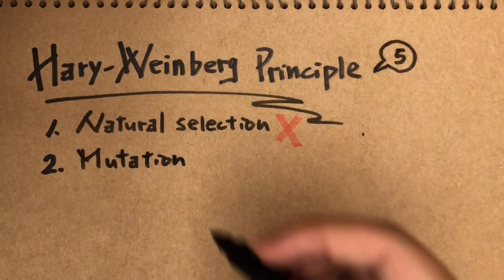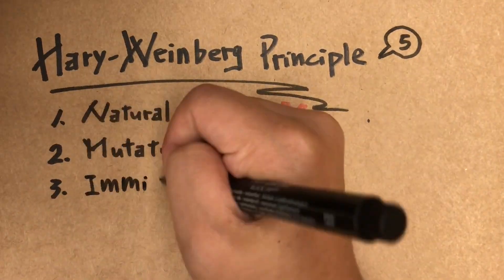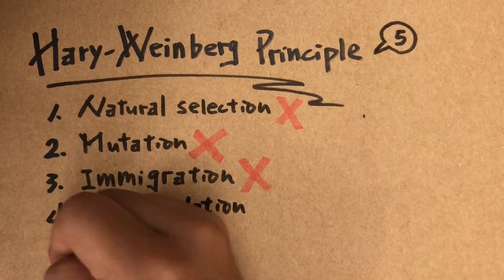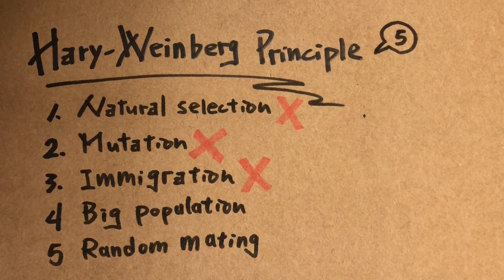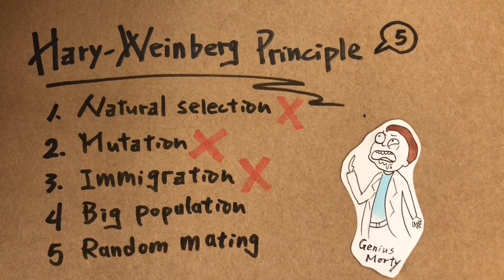Two, no mutation. Three, no immigration. Four, big population. And five, random mating. I kinda expect real smart people to understand why, so I'm not really gonna explain these.